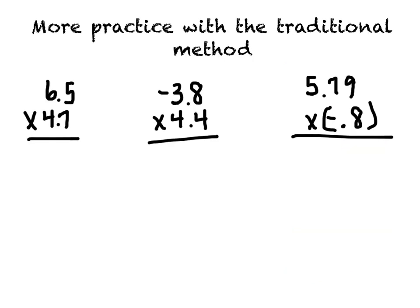What you're going to do now is some more practice with this traditional method of multiplying decimals. Copy down these three problems on a piece of paper and work them out — remember, no calculator allowed. Do remember that in the second problem and the third problem there's a negative involved, so you need to remember to use those rules as well. Come back in just a few minutes, or unpause the video, when you are ready to go through the answers.